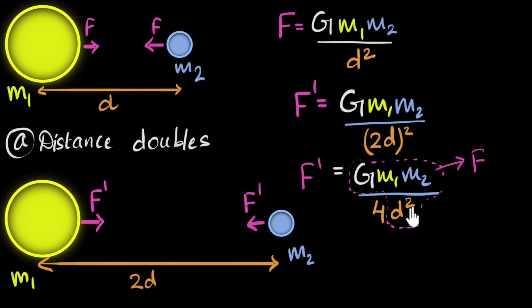Which means from this, we could say that F dash has become one fourth, one fourth of F. And that's our answer. So when the distance doubles, the force becomes one fourth.